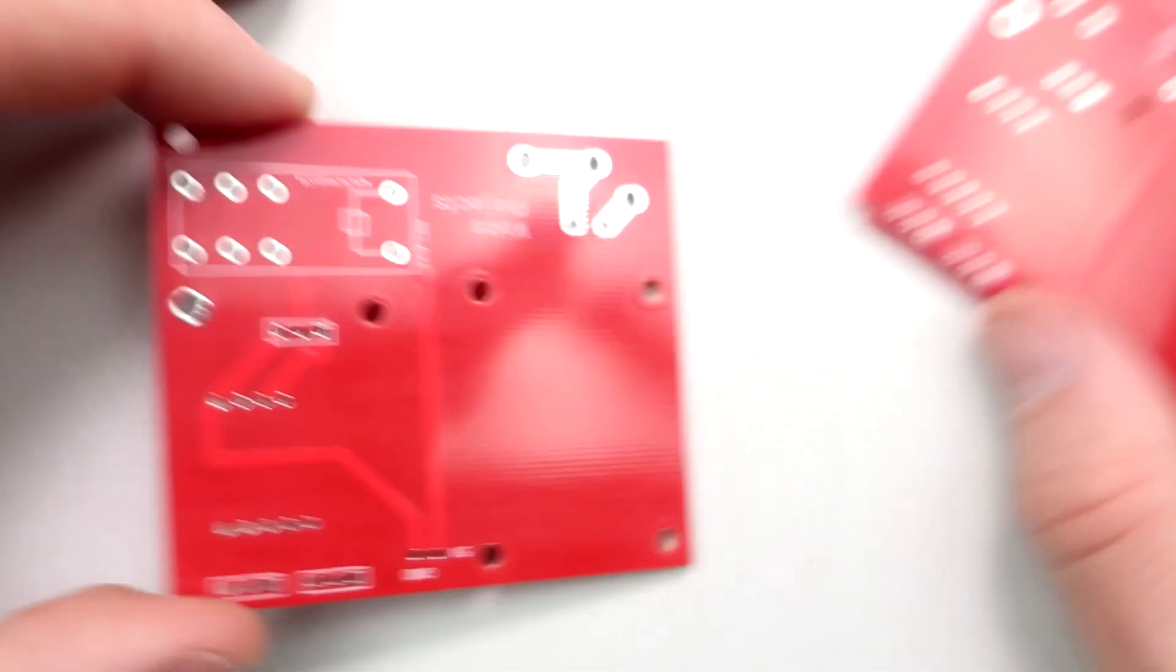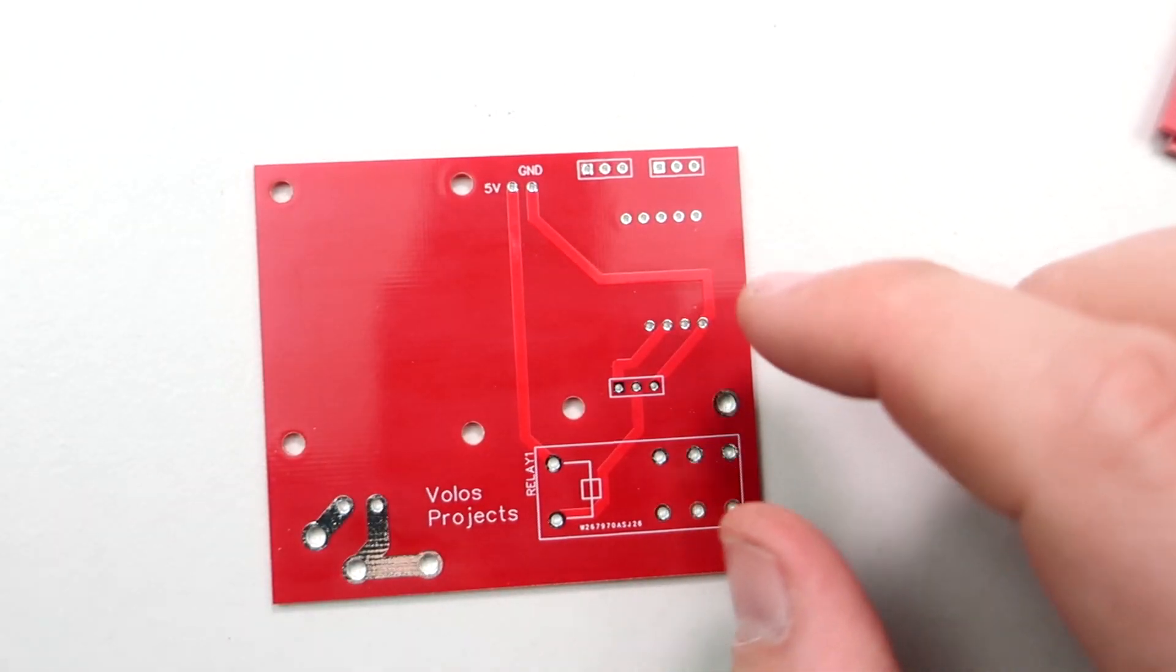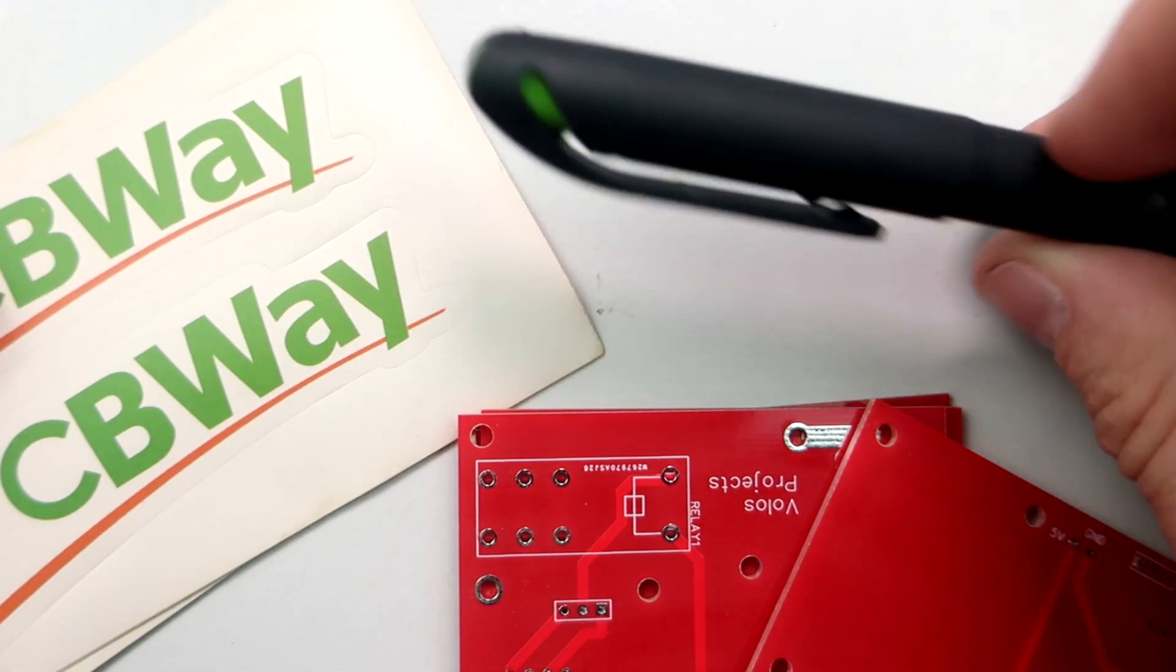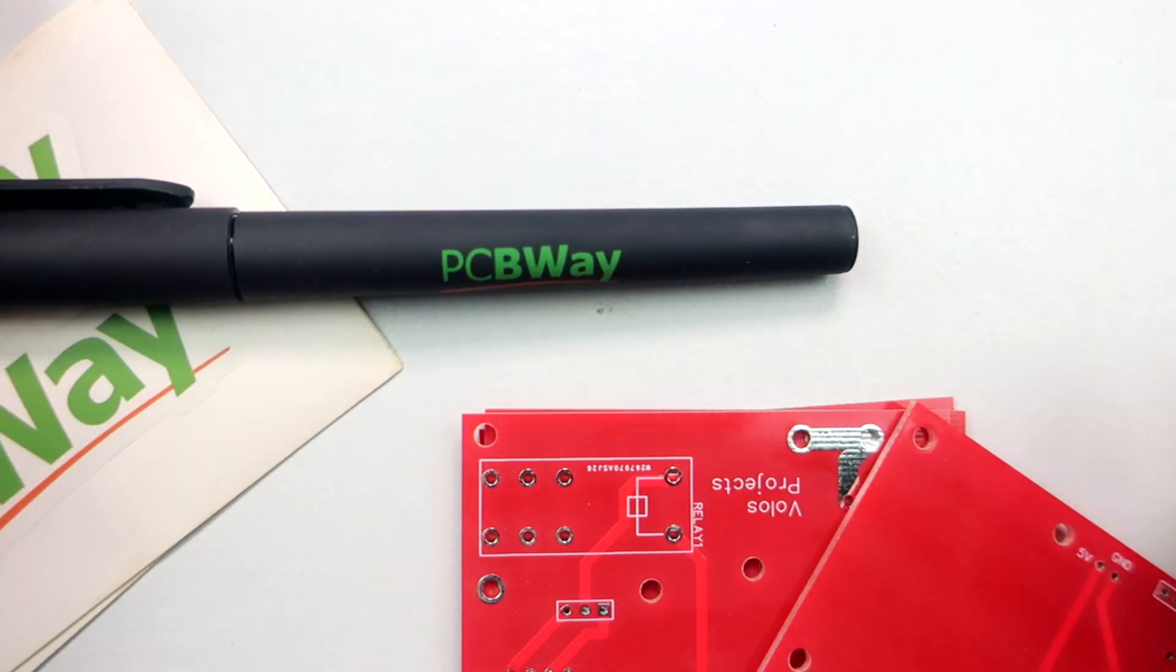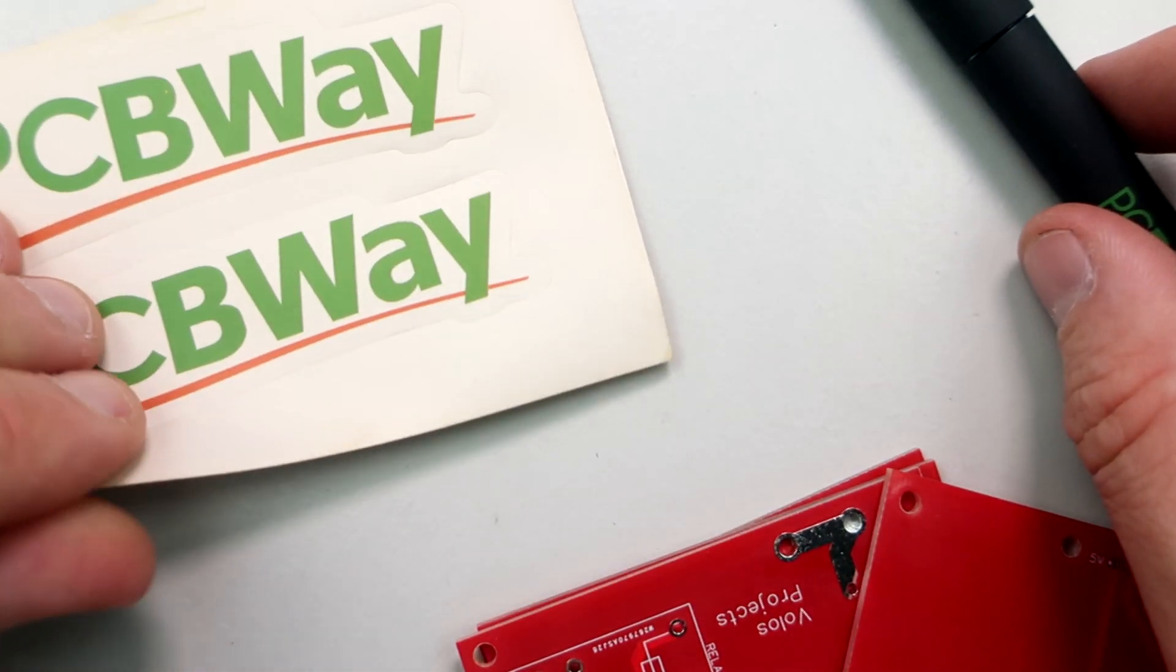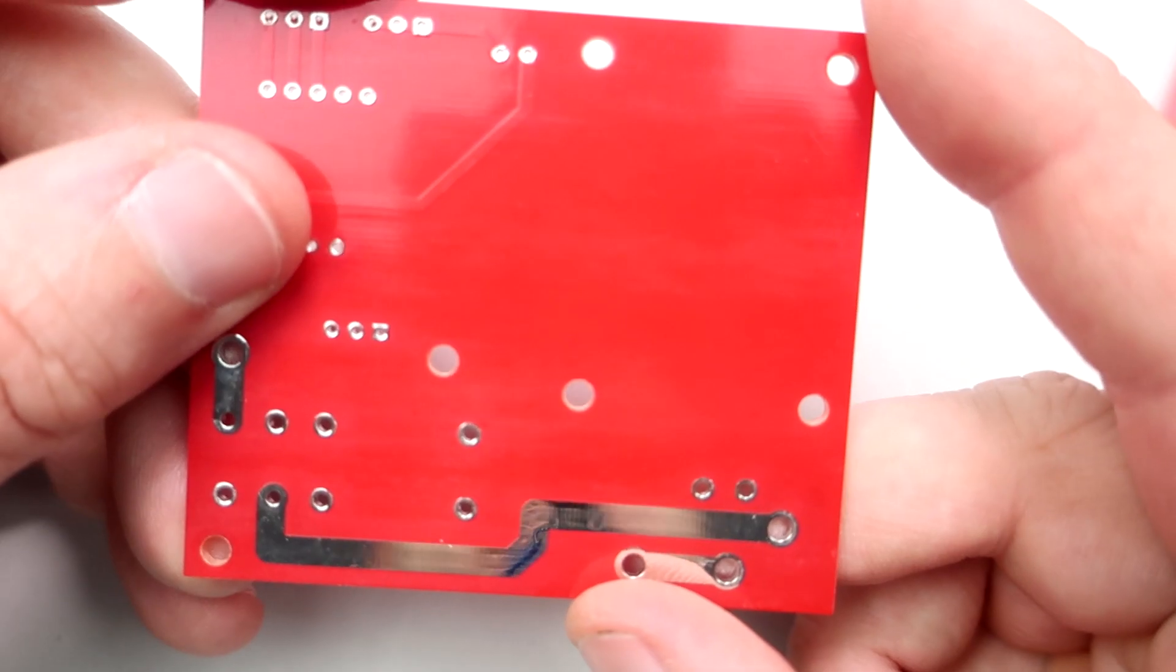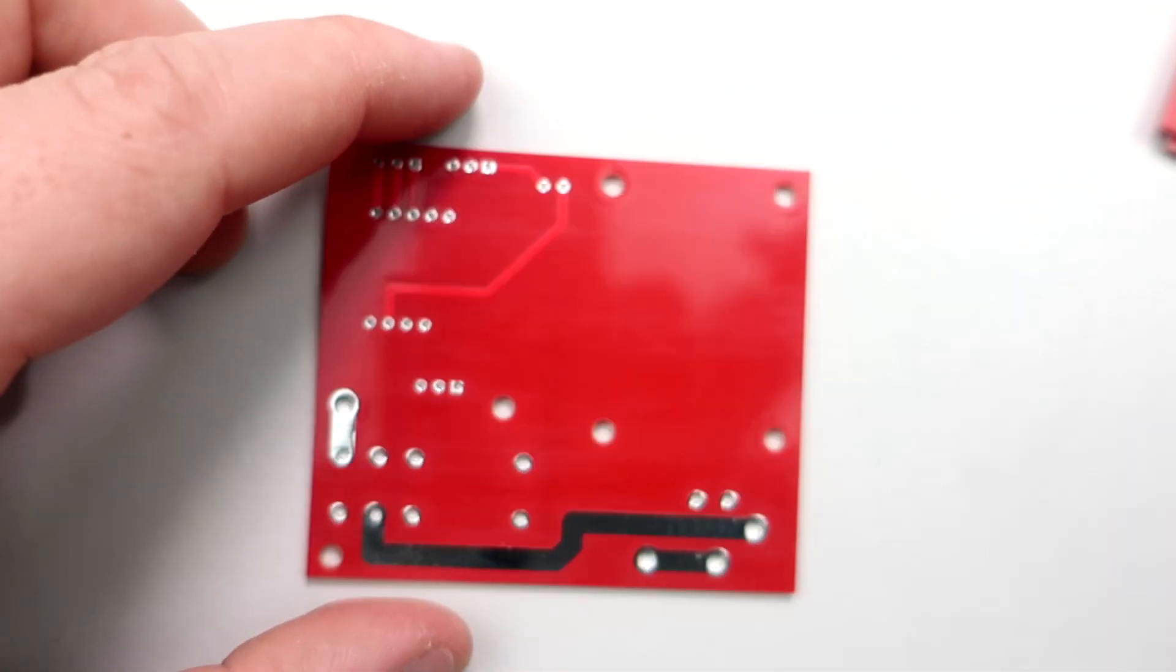I ordered this PCB at PCBWay site. I recommend PCBWay because they have great quality and good prices. Ten of these will cost you only $5, plus shipping of course. And they included this pen and a couple of stickers. Check the link in description because I will share this project so you can order this PCB on their site.